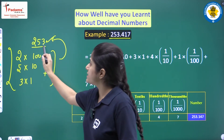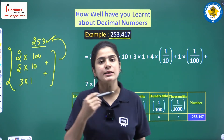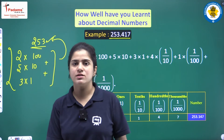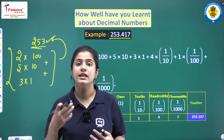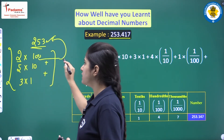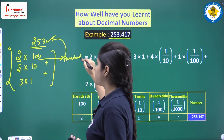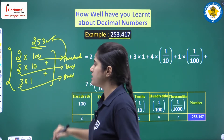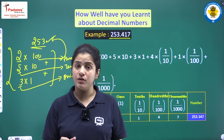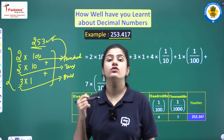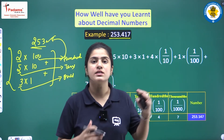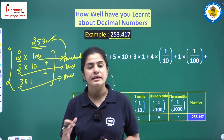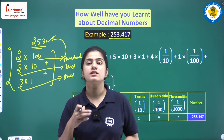The expansion is important because it tells us about the nature of the number. This 2 belongs to the hundreds, this 5 belongs to the tens, and this 3 belongs to the ones. Because 2 is multiplied with 100, 5 is multiplied with 10, and 3 is multiplied by 1. That is why they are called hundreds, tens, and ones. It is very important to do the expansion if we want to know completely the nature of the number.